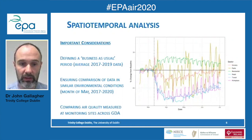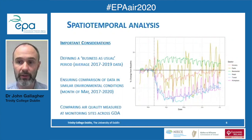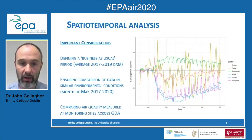Therefore, the impacts on air quality would be less affected by variations in rainfall, temperature, and transboundary pollution. Lastly, we wanted to compare air quality measured at different monitoring sites across the Greater Dublin area to assess whether one or multiple sites represent the air quality impacts of COVID-19 in the city.